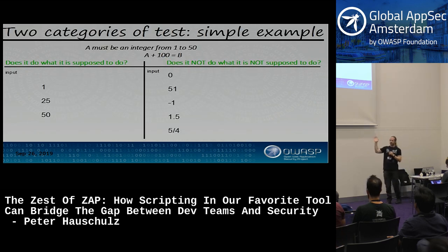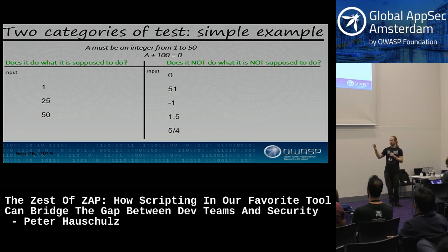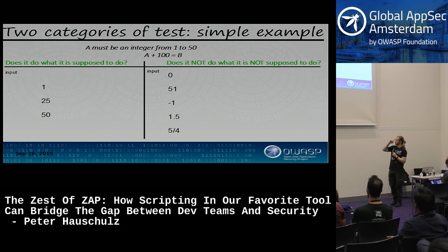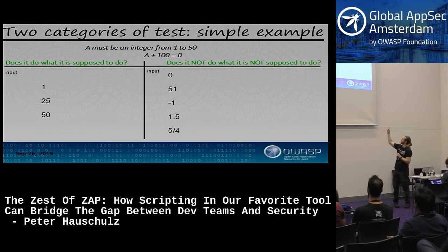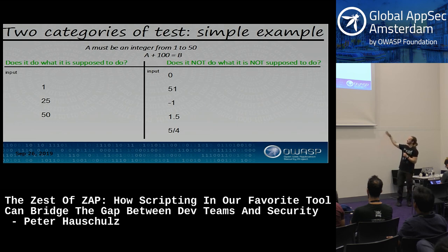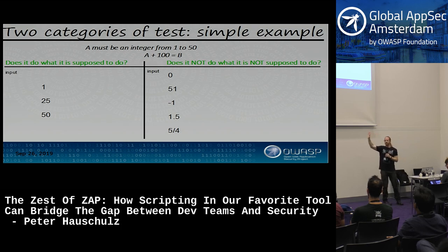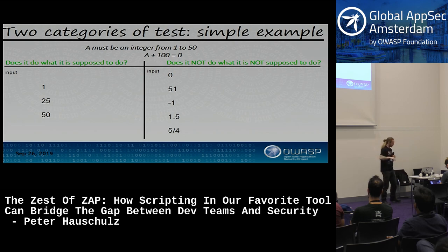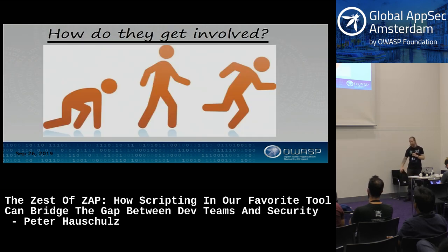Here's my one-slide summary of test theory. There are two basic categories: something does what you want it to do, and it doesn't do what you don't want it to do. If a tester is evaluating a simple function expecting an integer between 1 and 50, you test the happy flow with inputs of 25, 1, and 50. Then you test inputs you know won't work: 0, 51, negative 1. Testers already have that vocabulary and approach.